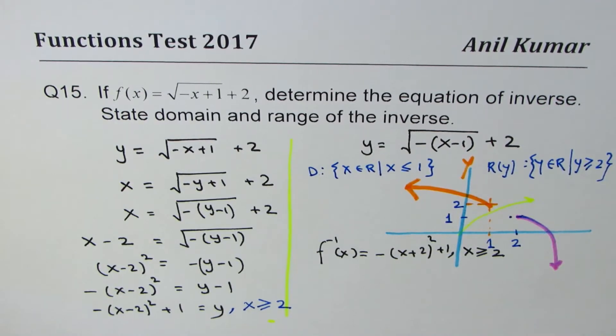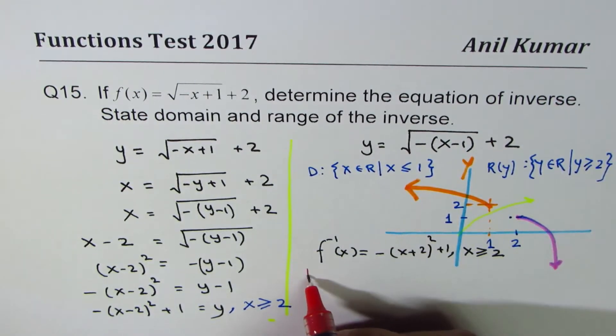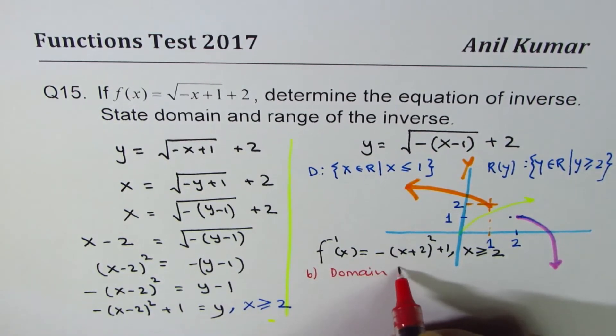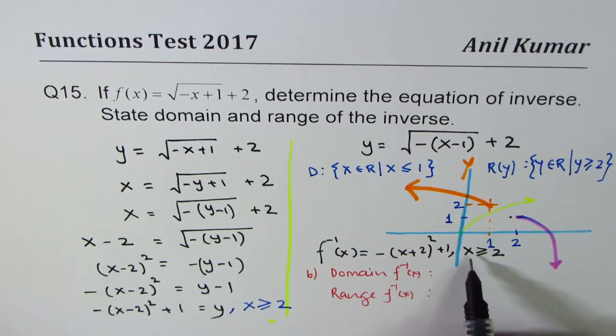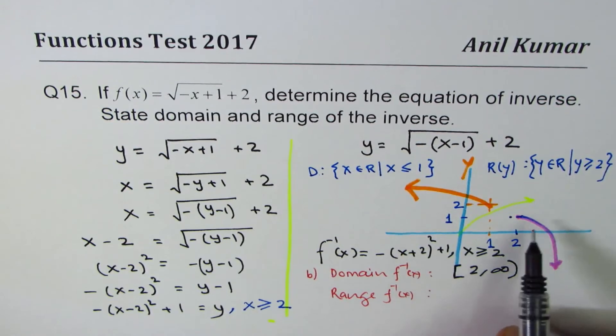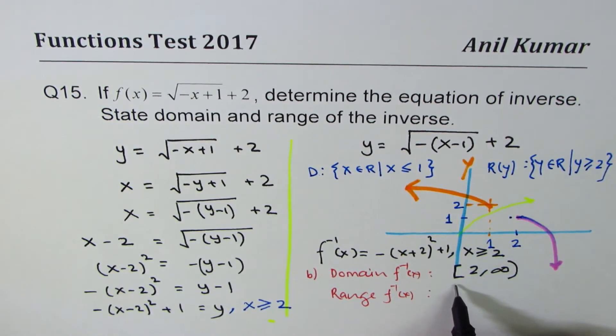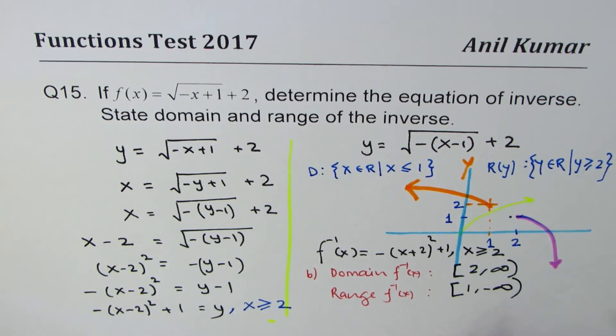Well, we have to answer that question also. So let's do part b. We know the inverse function. Now, part b is domain of f inverse x and range of f inverse x. So domain range of this function. You can always pause the video, answer the question, and then look into my suggestions. Domain we have already given here, greater than or equal to 2. So we can write this in interval notation as from 2 to infinity. And as far as range is concerned, it is from 1 to minus infinity. 1 is included, and infinity can never be included. So that is the domain and range of inverse function.